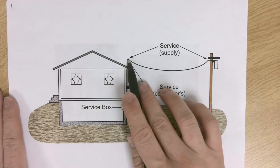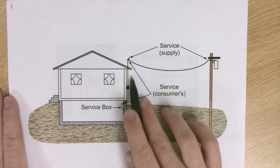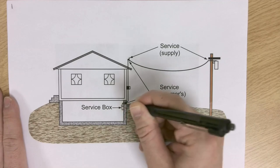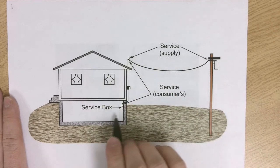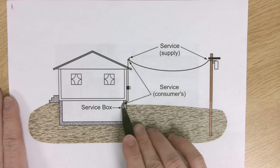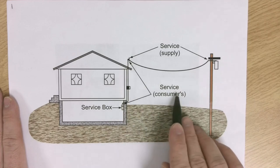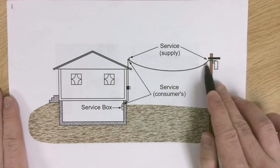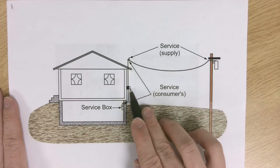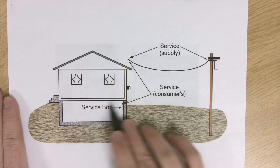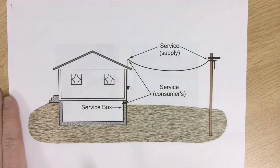From that splice or connection point down to basically the top half of your service box or panel — the code refers to it as a service box, but in a house that would be the panel — is the consumer's service. Everything that comes on this cable down through the meter, which counts the electrical energy used, and then that energy down to what is used in the house is what the consumer is going to pay for.